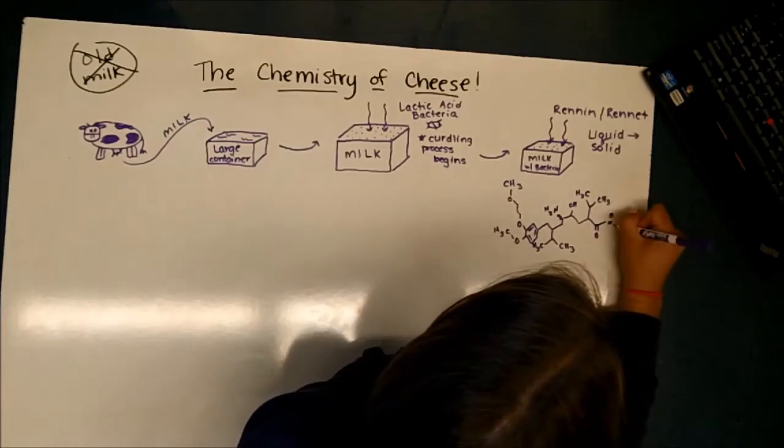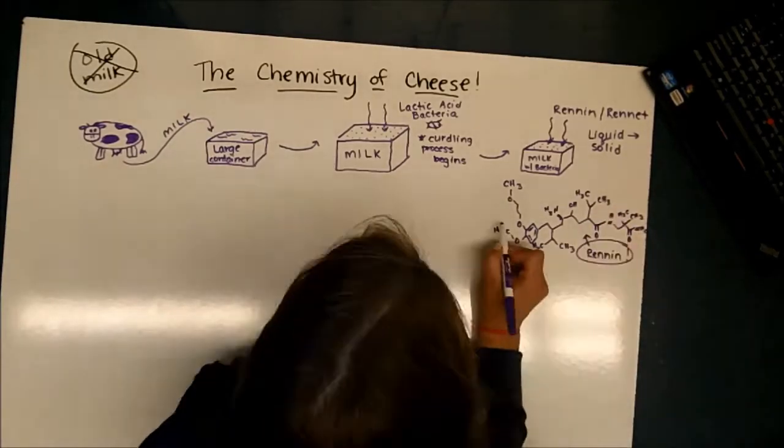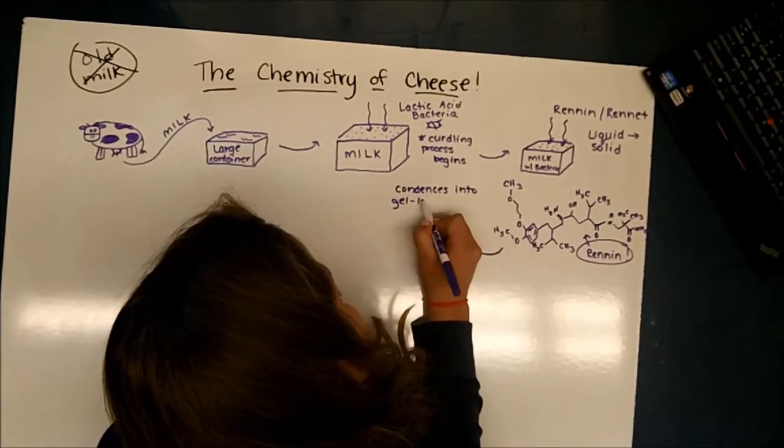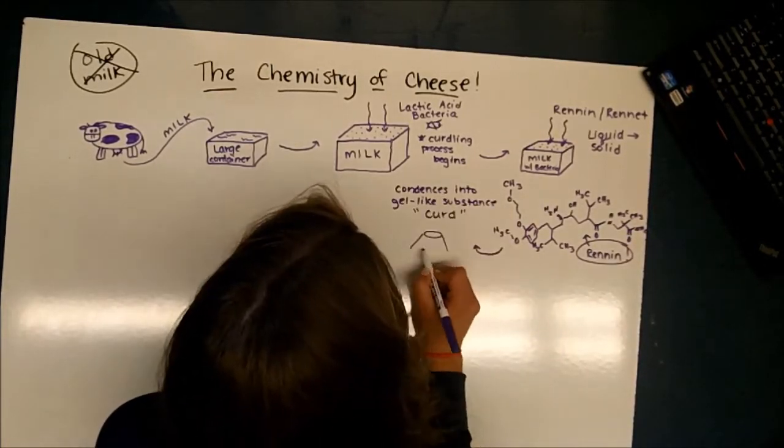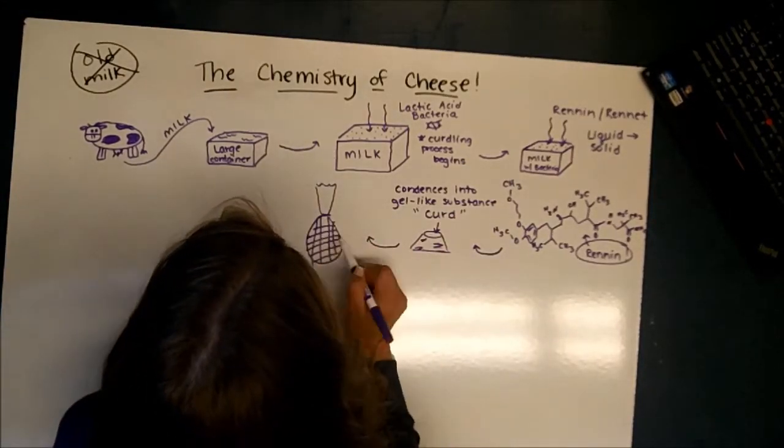They get larger in size as they overlap to eventually form a gel network with trapped water and fat inside of it. Essentially, the rennet turns the liquid substance into a gel, which is commonly referred to as a curd. The curd is then drained, usually with a mesh bag, to remove the excess water.